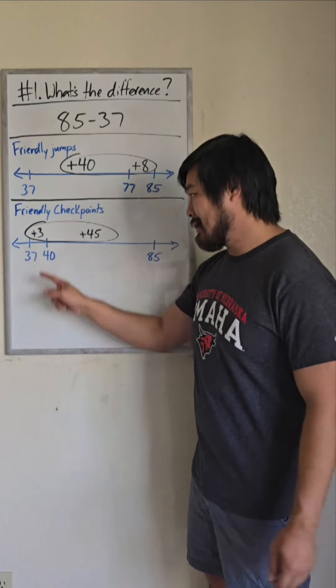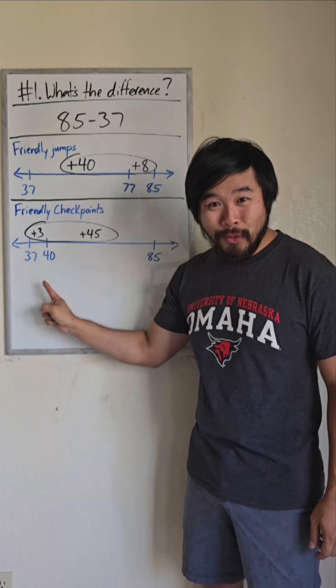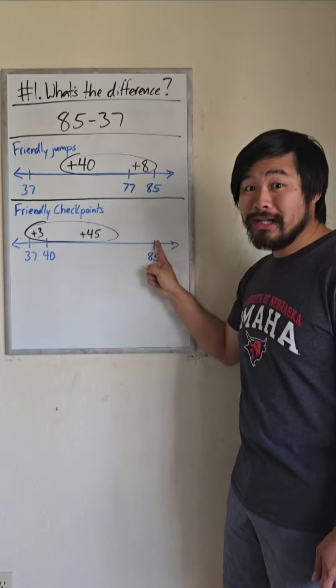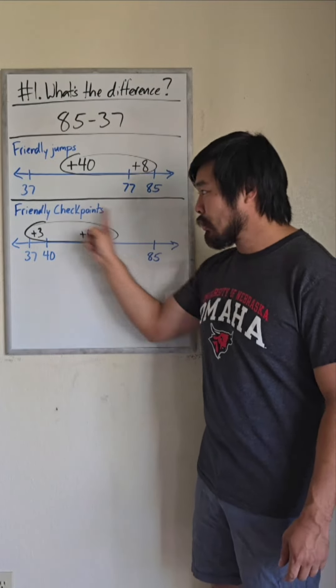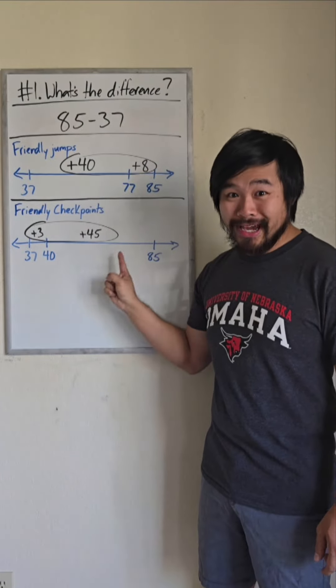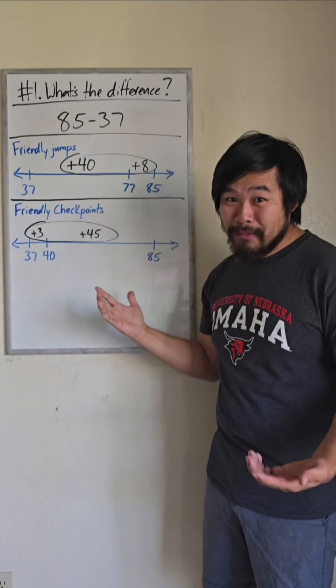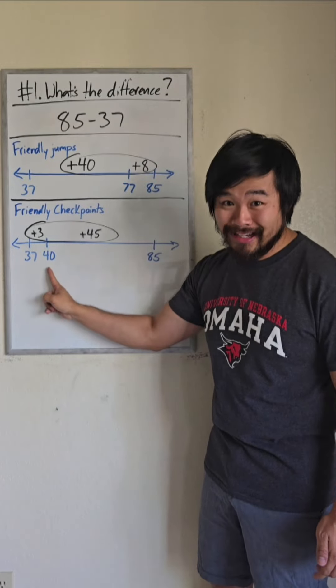Another way we can do this is jump 3 from 37 to land on 40, and jump 45 from 40 to land on 85. So in total, I jumped 48. I call this method friendly checkpoints because the checkpoints are nice.